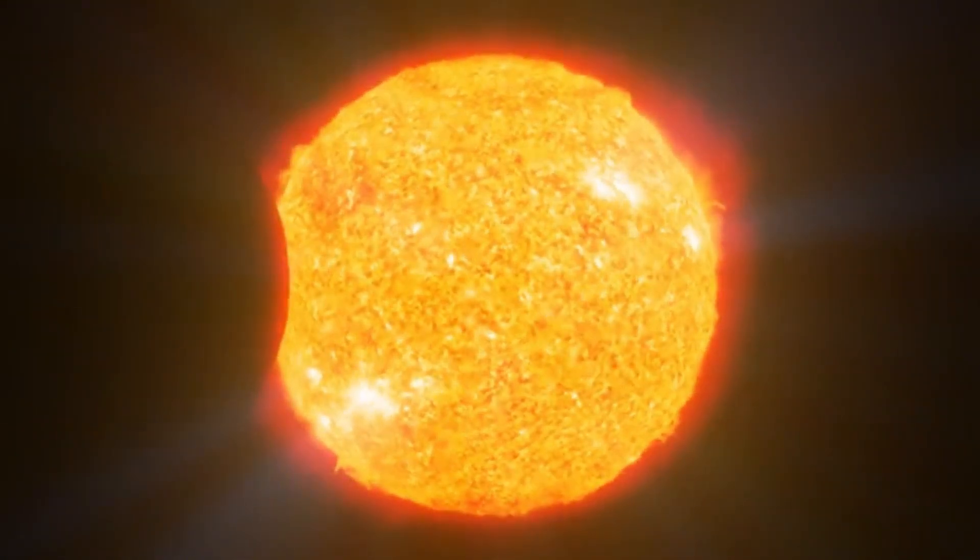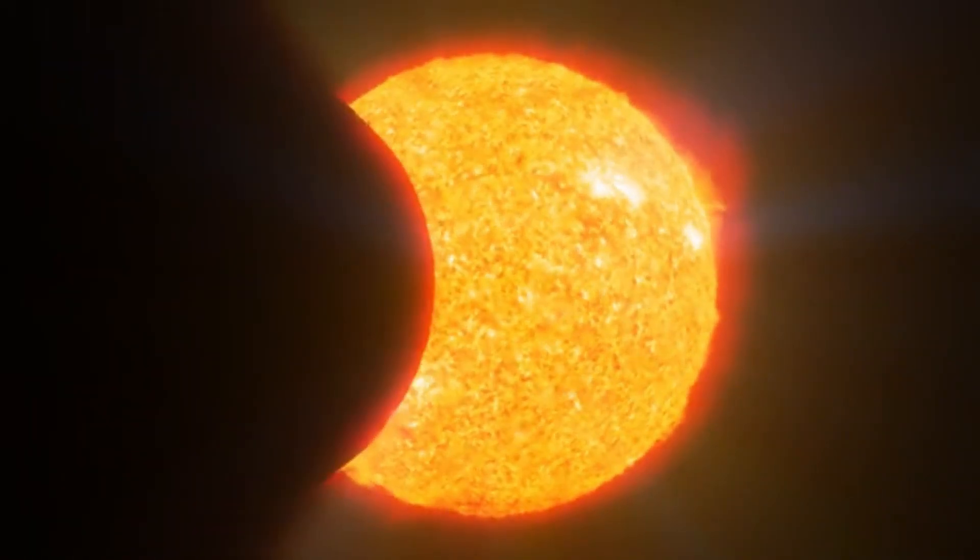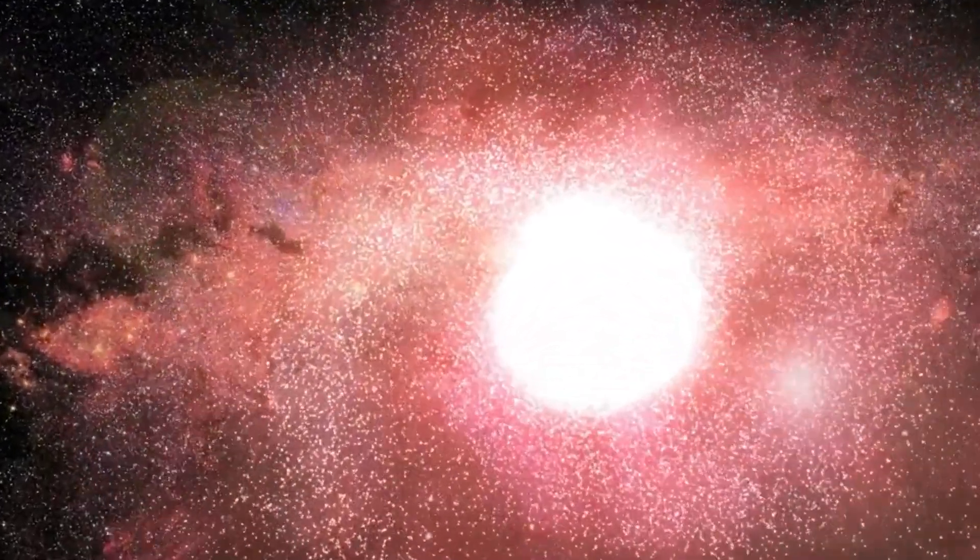This event happens roughly every eleven years, meaning the midpoint of the sunspot cycle, and it has wide repercussions for us here on Earth. The sun could introduce a serious risk that could cause total disruption and calamity for everyone in the world.